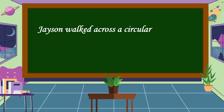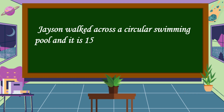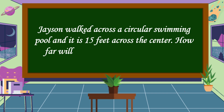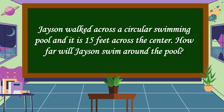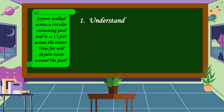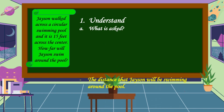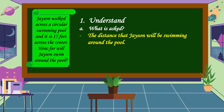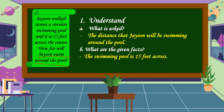This is our first problem. Jason walked across a circular swimming pool and it is 15 feet across the center. How far will Jason swim around the pool? To understand the problem, we should know what is asked. In this problem, it is asking for the distance that Jason will be swimming around the pool. The given fact is the swimming pool is 15 feet across.